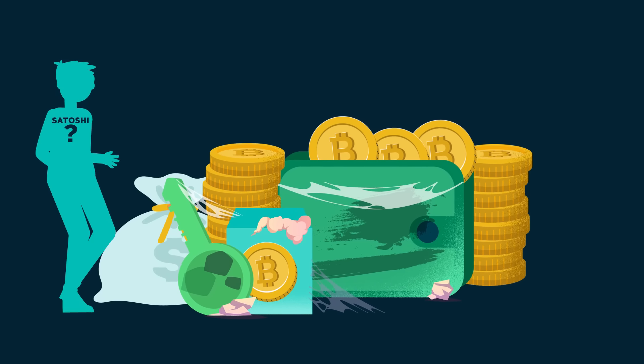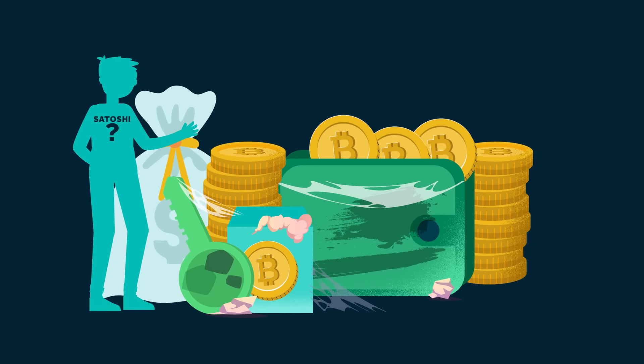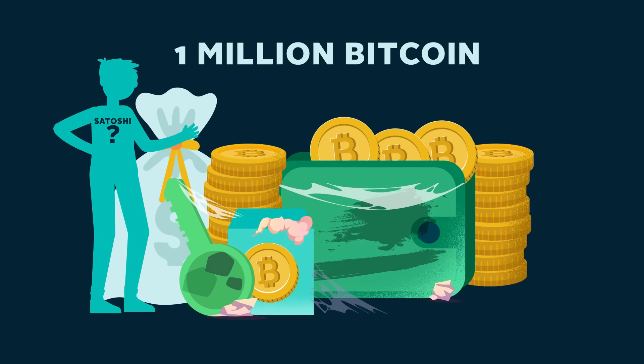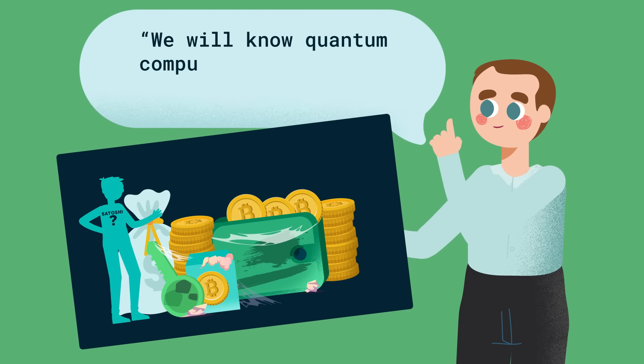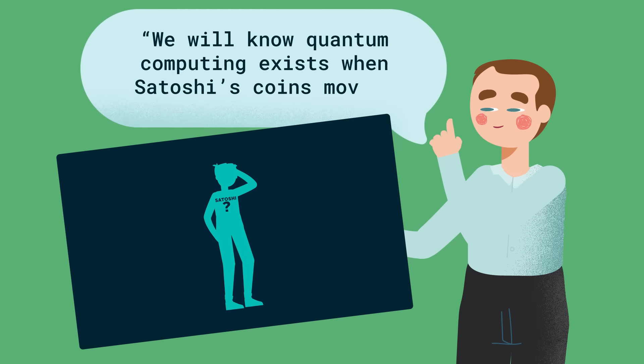For instance, the inactive wallets supposedly owned by Satoshi, containing around 1 million Bitcoin. As Bitcoin advocate Anthony Antonopoulos once said, we will know quantum computing exists when Satoshi's coins move.